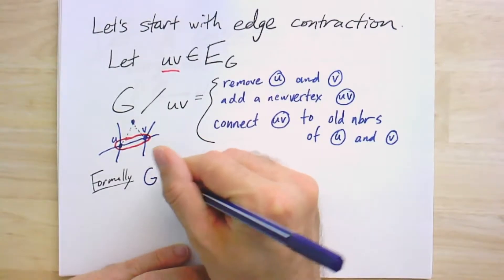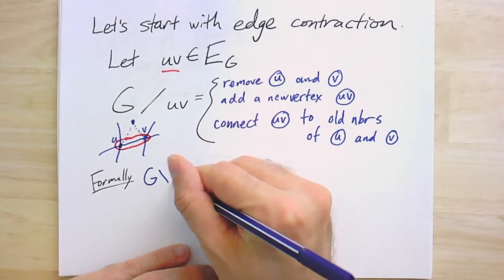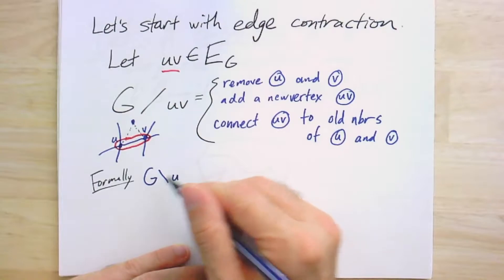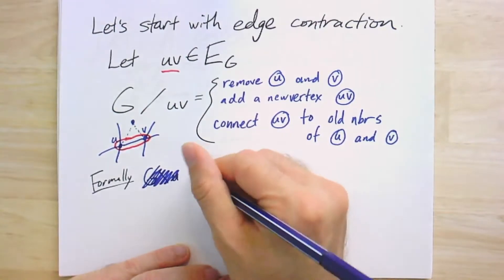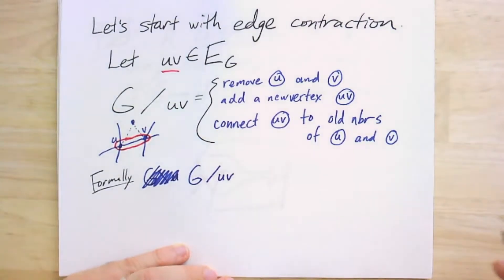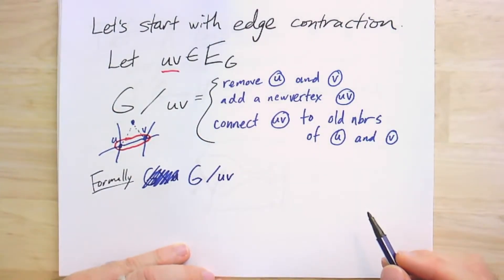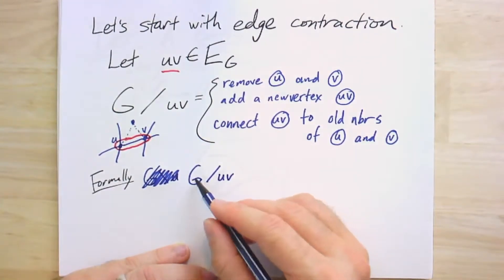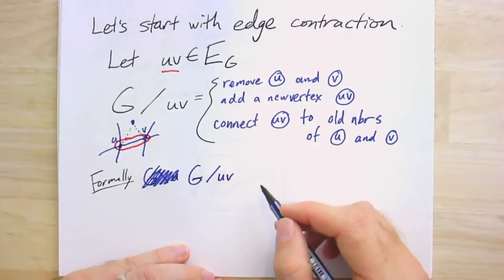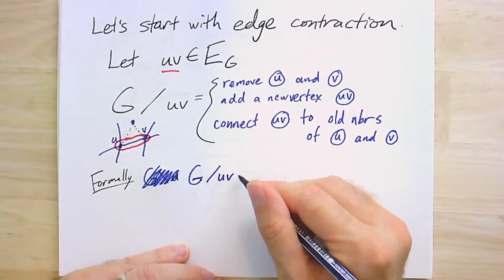G mod UV, that is contracting UV, is going to be a graph. And the vertex set is, it's something like VG minus the set U and V, union with this new vertex.